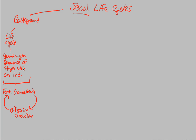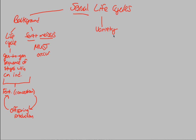Fertilization and meiosis both are musts for sexual life cycles to ever occur. Fertilization plus meiosis must absolutely occur in order for these sexual life cycles to happen. There are many different sexual life cycles worth studying, and the ones we're going to mention are the non-human ones that you should understand.